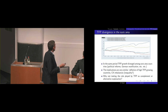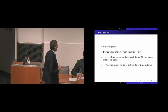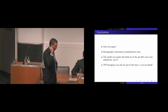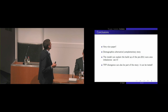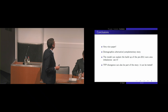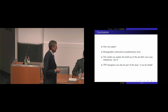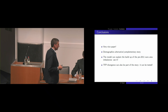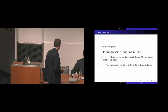To sum up: I like the model a lot. I think it is powerful and can be used to learn and explain many things we have observed. Demographics should be discussed as an alternative or complementary story a bit more, though the paper was really a draft so maybe that was coming anyway. The model can be used to explain the build-up of the pre-2011 euro area imbalances, and TFP divergence can also be tested in it to get a quantitative assessment. Thank you.